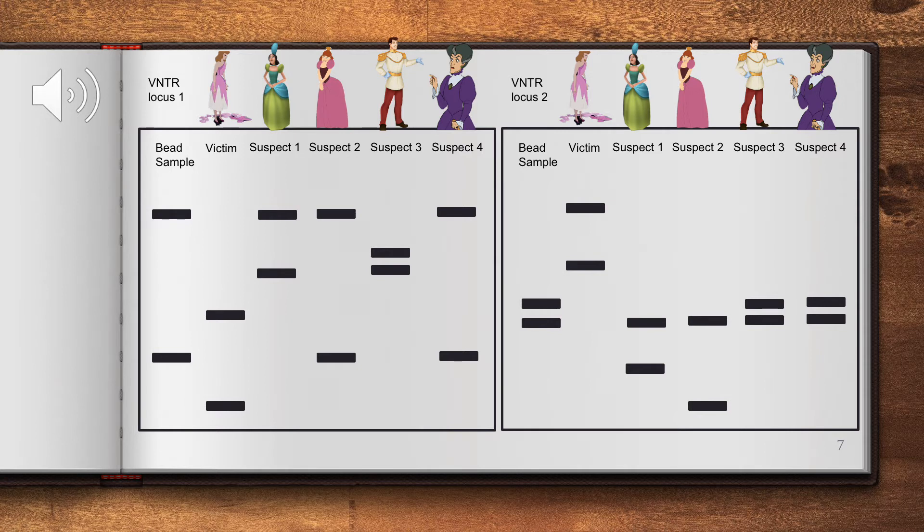Suspect 3 is the prince. At Locus 1, none of his bands match the sample bands. At Locus 2, the prince's DNA is the exact same as the DNA of the bead. However, the prince is not guilty because his DNA doesn't match at both loci.